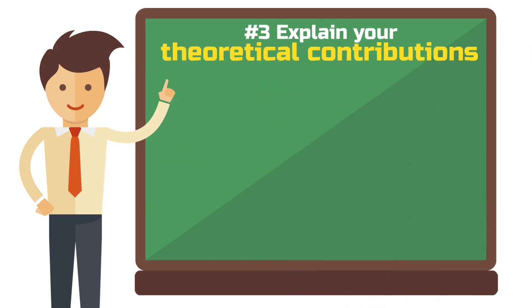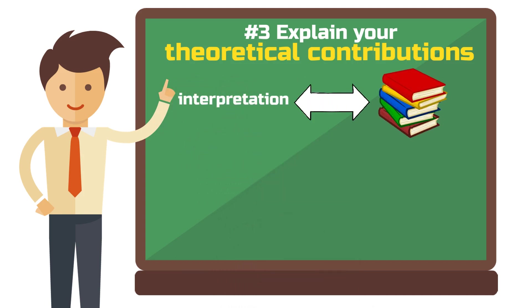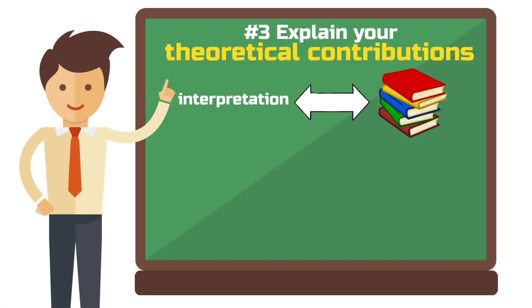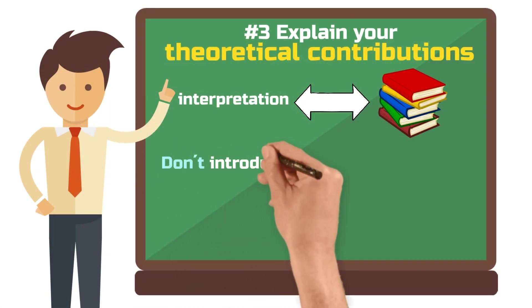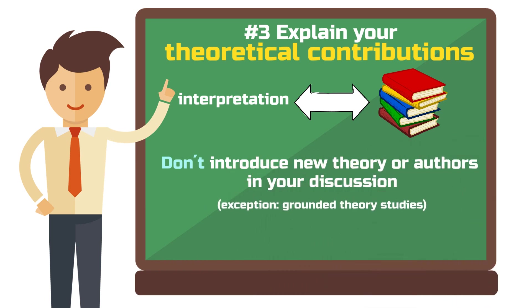Component 3: explain your theoretical contributions. If you work with theory, the next step in your discussion is to relate your theoretical interpretation to existing theory. The good news is that you have already covered existing theory in the front end of your study, meaning you don't need to find new references here. An exception is grounded theory studies, in which you do not have a theoretical background but introduce existing theory for the first time in the discussion. But for most other studies, stick to the rule of not introducing new theory or authors in the discussion chapter.